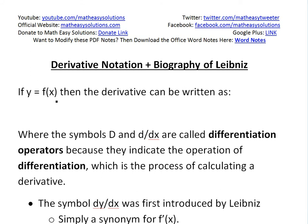So basically, if we have y equals f of x, then the derivative can be written as f prime — you could write it as this. And this basically means y prime — you could also write it like that. And you could also write it in Leibniz notation, which is dy over dx. These equals signs just mean they're all the same.